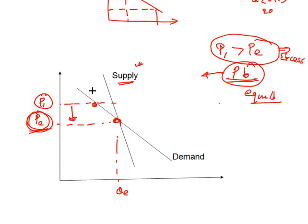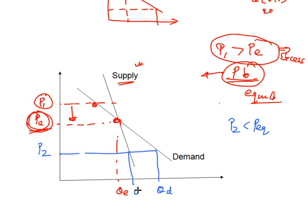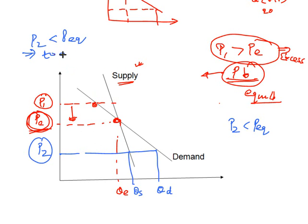Similarly, if the price is lower than the equilibrium — say at P2 — there is excess demand. The quantity demanded exceeds the quantity supplied. To achieve equilibrium, the price has to increase. When the price increases, both quantity demanded and quantity supplied move toward equilibrium. Because the supply curve is negatively sloped, the quantity supplied also decreases as price rises, converging toward equilibrium.